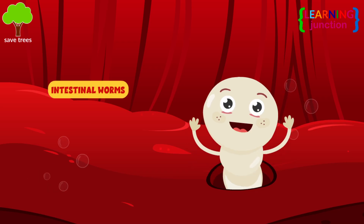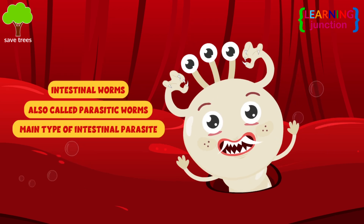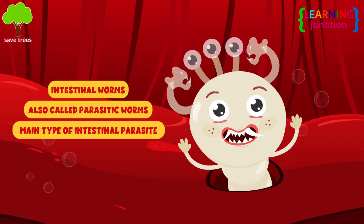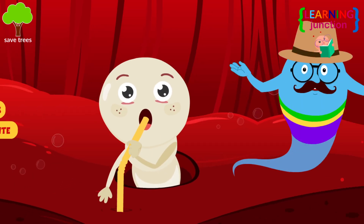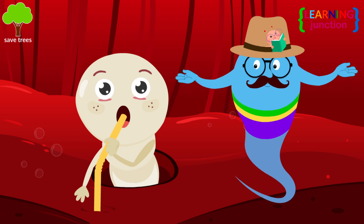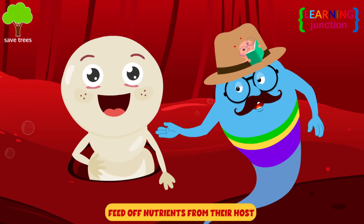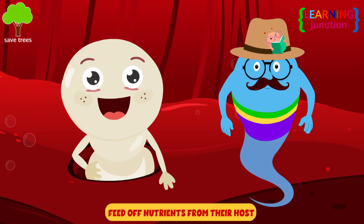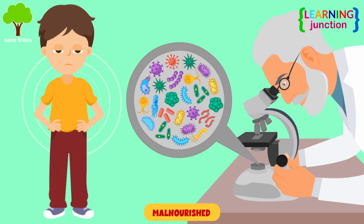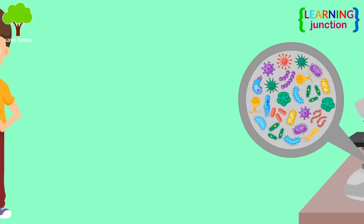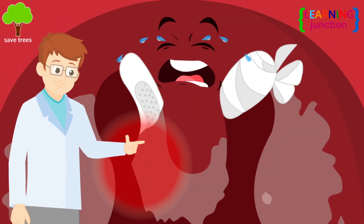Intestinal worms, also called parasitic worms, are one of the main types of intestinal parasites in humans. They live inside the digestive system and feed off nutrients from their host. It causes the infected person to become malnourished and prone to disease and chronic illness.